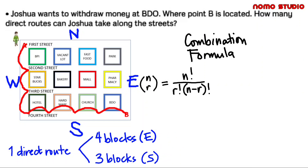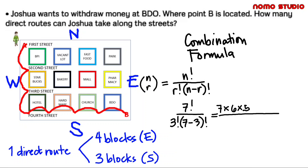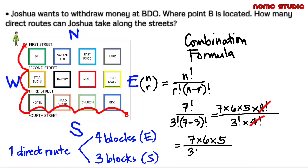Let's try with R equal to three: seven factorial over three factorial times the quantity seven minus three factorial. This is seven times six times five times four factorial, over three factorial times four factorial. So we have seven times six times five over three times two times one. This is 210 over six. So 210 divided by six equals 35.